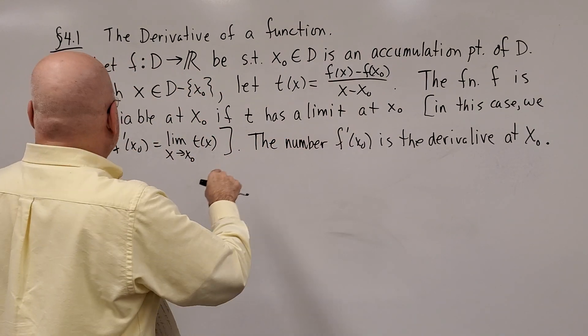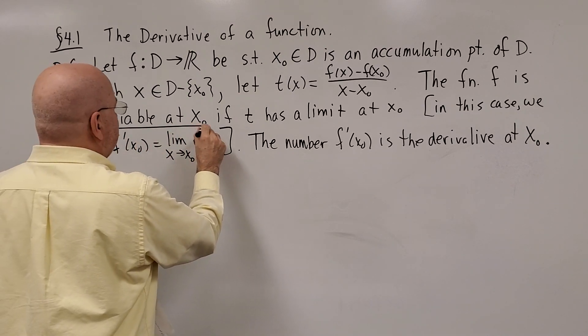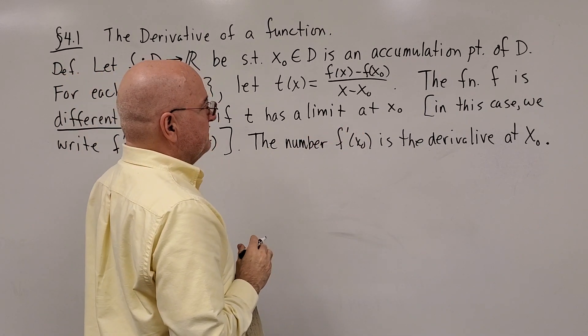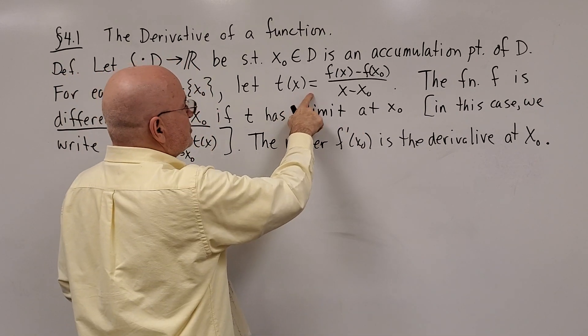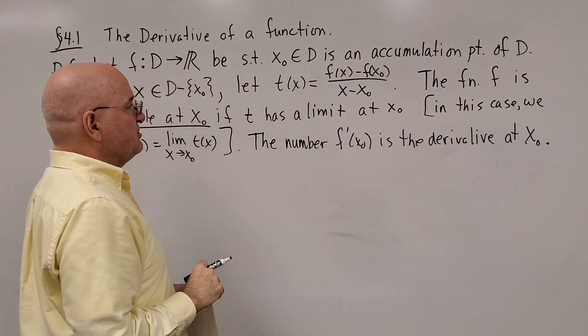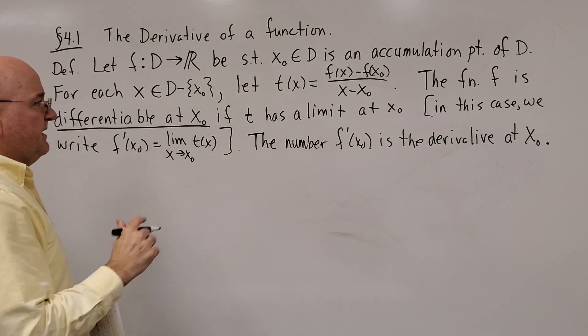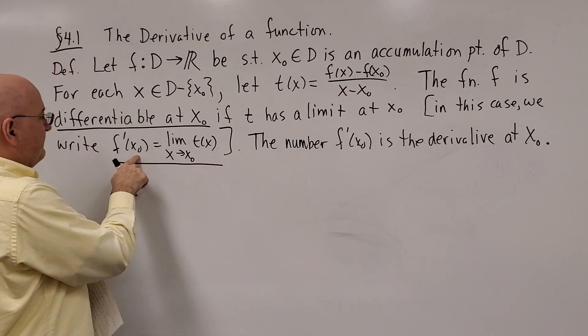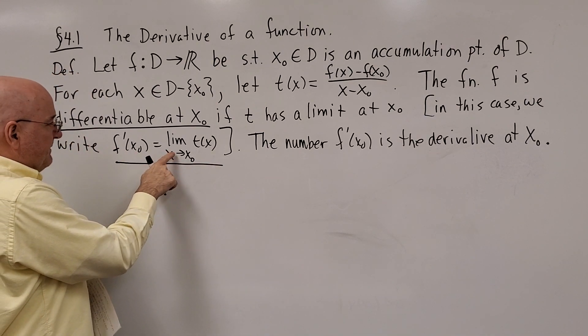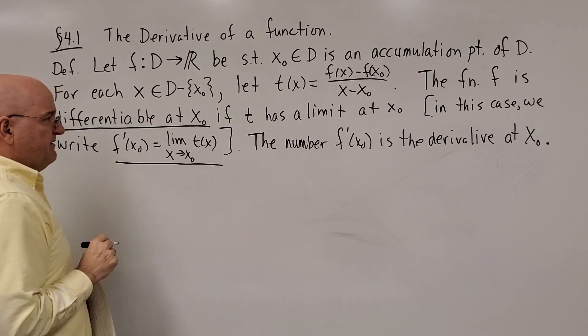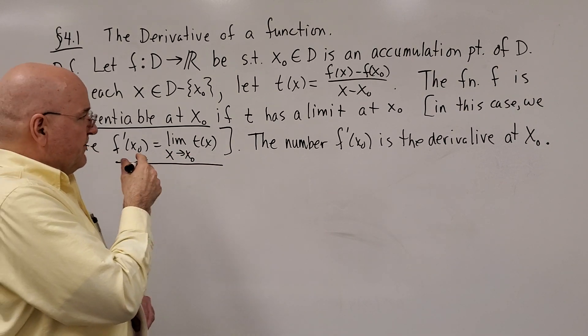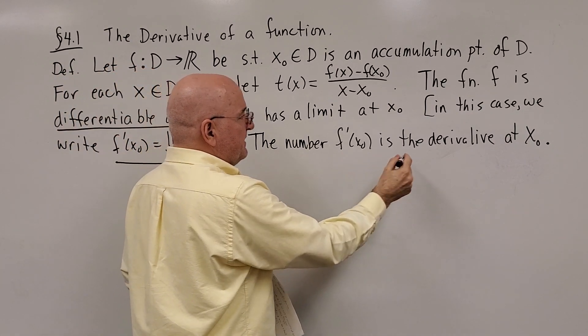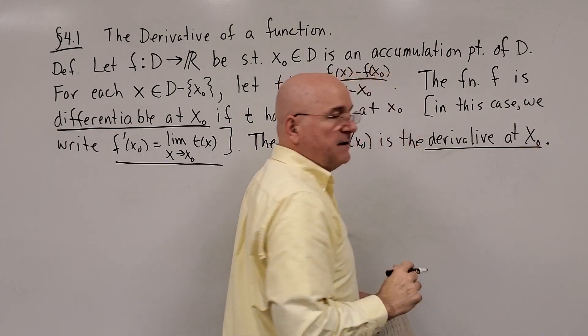The function f is differentiable at x not if t has a limit at x not. If this function has a limit as x approaches x not, in this case we would say that f prime of x not is equal to the limit as x goes to x not of the function t of x. Another way of saying this is the number f prime of x not is the derivative at x not.